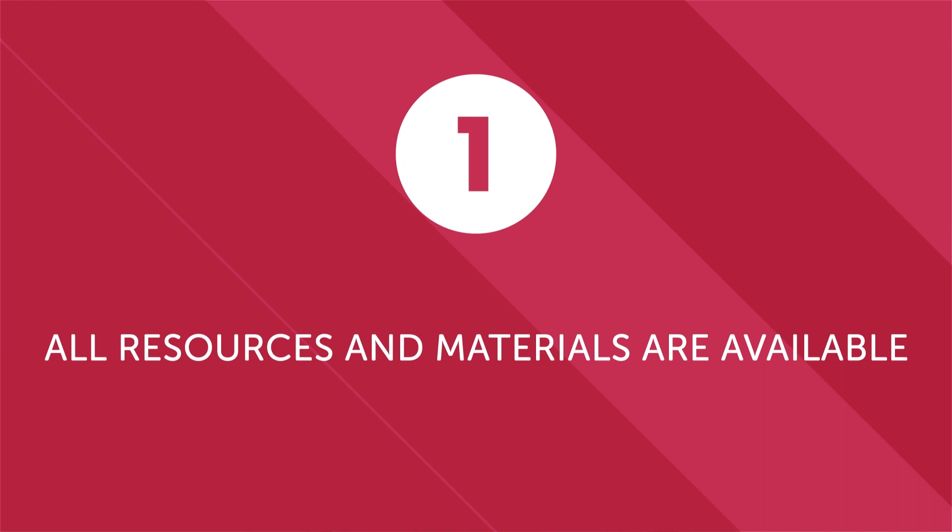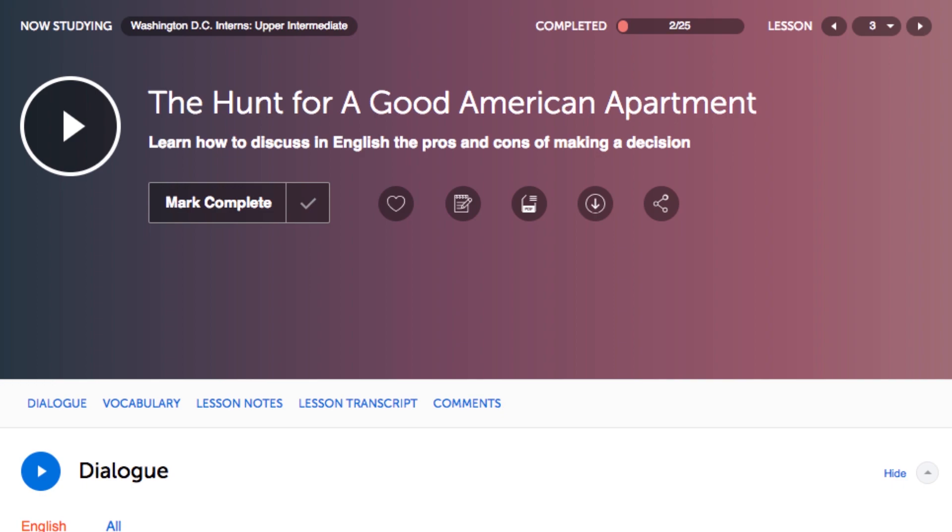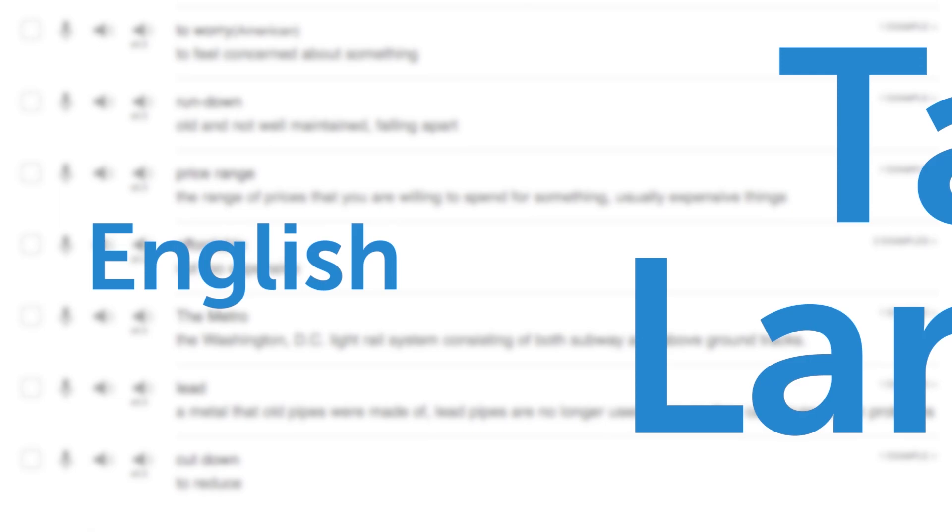Now, let's look at three ways our language learning program helps you learn even faster if you have a native speaker partner. First, all resources and materials are available in English and in your target language. Studying with a partner is special because it's an opportunity for both of you to learn a new language. That's why every single lesson, transcript, vocabulary list, and resource on our website is available in English and in your target language. You can learn from each other.